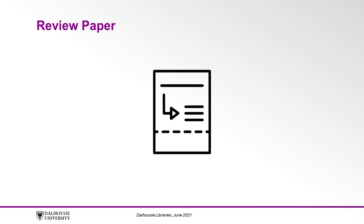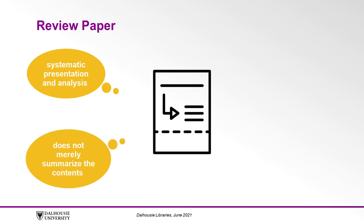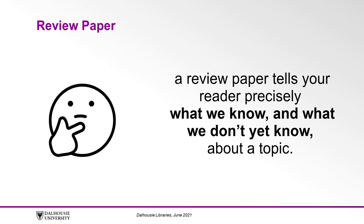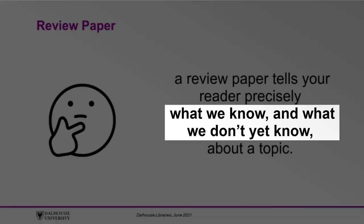The body of the review paper consists of a systematic presentation and analysis of material written on the chosen topic. It does not merely summarize the contents of individual papers, but attempts to put sources in conversation with each other. It explains approaches to the topic, describes trends in the literature, highlights important debates and disagreements, and identifies questions that have yet to be answered. In other words, a review paper tells your reader precisely what we know and what we don't yet know about a topic.